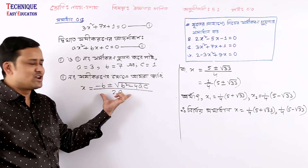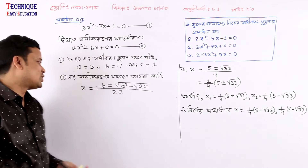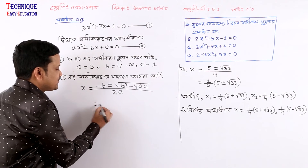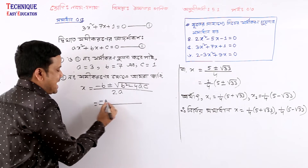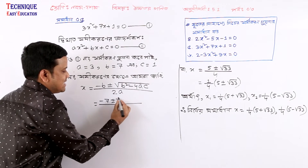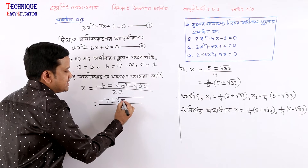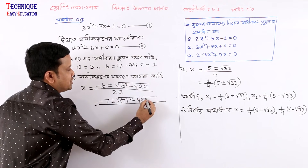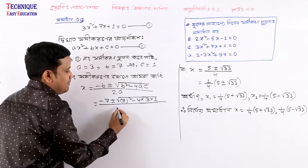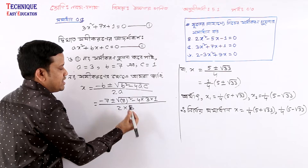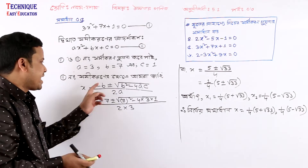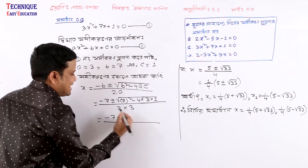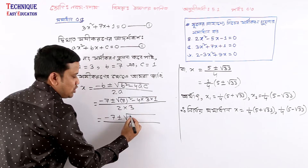So we substitute: x equals minus 7 plus or minus root of b squared minus 4ac. Here b is 7, a is 3, c is 1. So we compute minus 7 plus minus root, divided by 6.